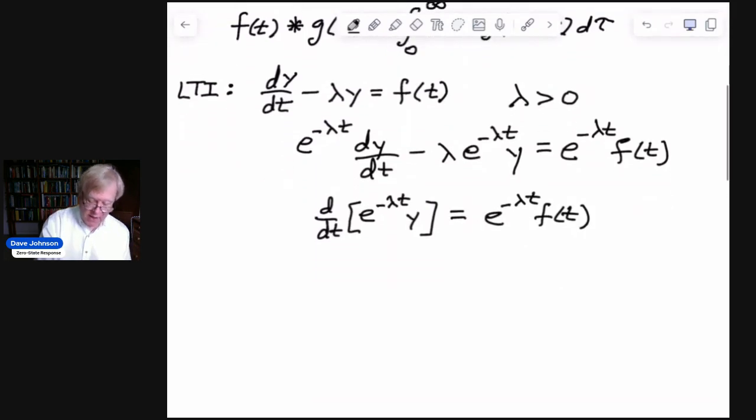Now, the nice thing about this is that we can multiply both sides by dt and integrate. And when we do that, we want to think about changing the variable of integration from t on the right side to τ. So I'm going to do that.